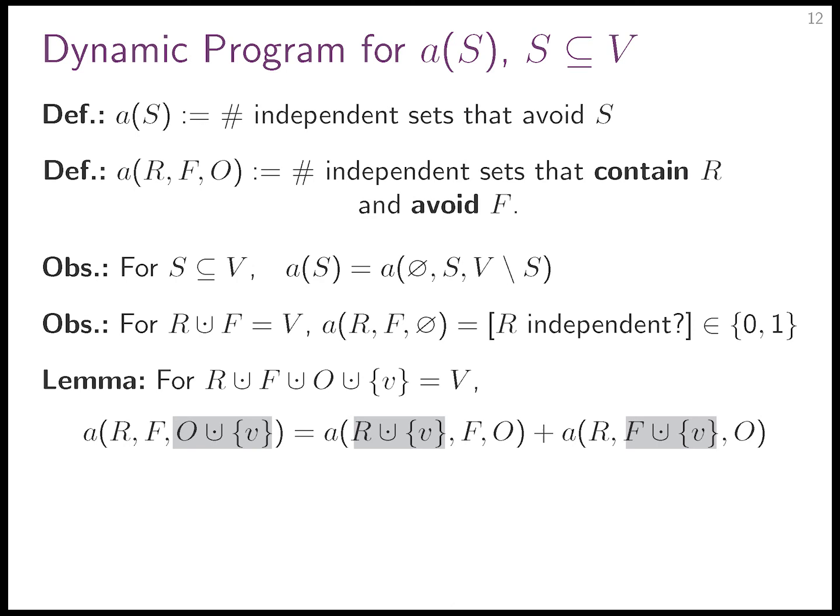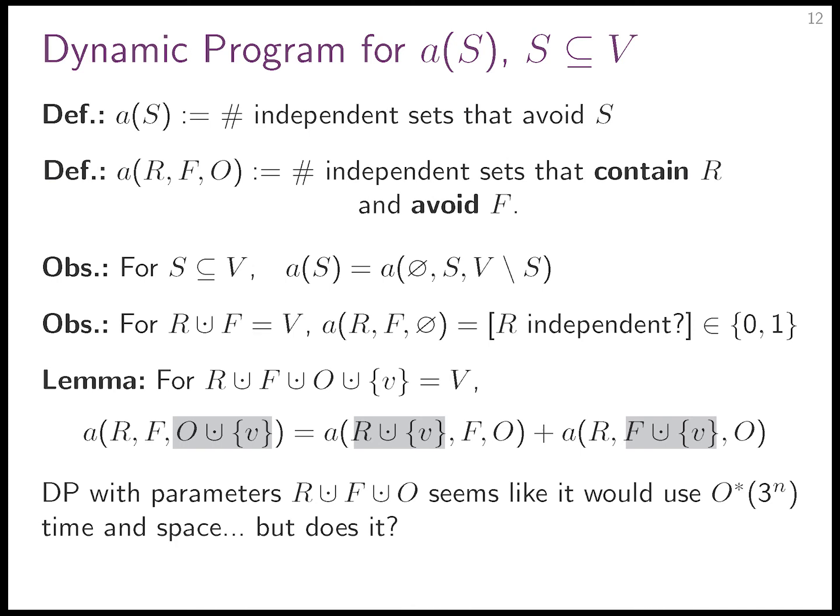Using normal branching: take an optional vertex and move it either to required or forbidden and add those two options. For the 'take it' case, I can immediately also forbid all neighbors of v, since we're building independent sets. So: a(R, F, O∪{v}) equals a(R, F∪{v}, O) plus a(R∪{v}, F∪N(v), O\N[v]), where N(v) is the open neighborhood and N[v] is the closed neighborhood. This is a fairly basic recurrence for independent sets with R, F, O.